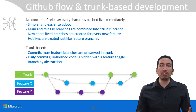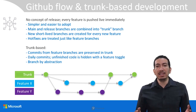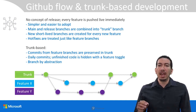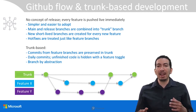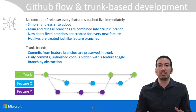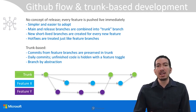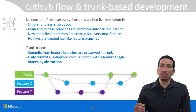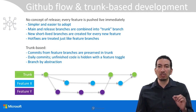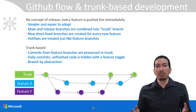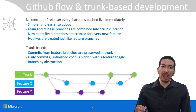The GitHub Flow and trunk-based development models are a lot simpler and easier to adopt. In these, there is no concept of release — every feature is pushed live once it's reviewed. Here the main and release branches are combined into a branch referred to as trunk. Every time a developer starts working on a new feature, they create a new branch, and the idea behind these branches is that they should be short-lived. Hotfixes are also treated like features, as they will have their own independent branch for every new fix.